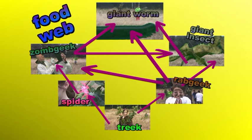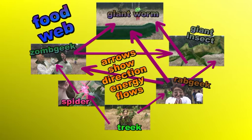For example, what types of creatures does the giant insect eat? Well, looking at the diagram, I can see immediately it eats Rabgeeks and Zomgeeks. And don't forget, the arrows show the direction that the energy flows through the food web.